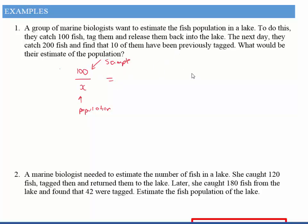And then what happens, I released all those 100 back into the lake, and the next day I went back and I caught 200 fish. So that's now my new population because that's how many fish I've caught. And 10 of them had been tagged. Okay, my sample, the ones that were tagged, goes on top.